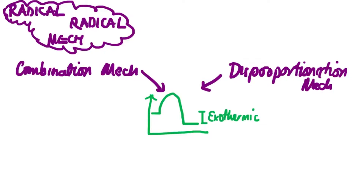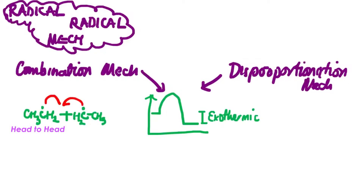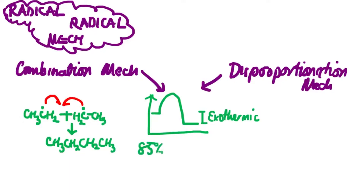In the combination mechanism, our reactant is the ethyl radical, with the alpha carbon having its electron ready to react with the same species on the other side — undergoing what is called a head-to-head reaction. This results in the formation of one product, which is butane, and this butane compound accounts for approximately 80 to 85 percent of the products.